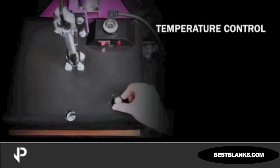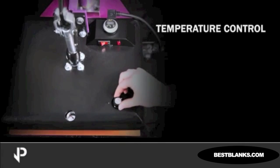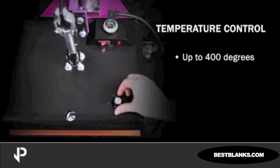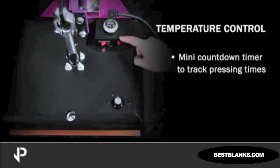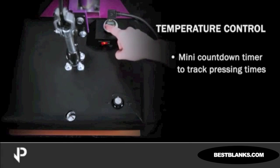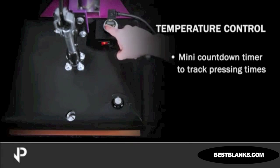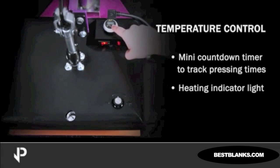The JetPress machines feature an adjustable temperature control up to 400 degrees, an accurate temperature gauge, and variable pressure settings. A mini-digital countdown timer is available for the operator to track pressing times. The machines are also equipped with a heating indicator light so you know when your press is ready for use.